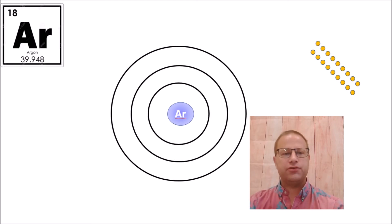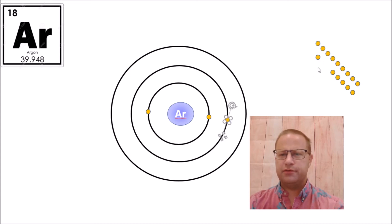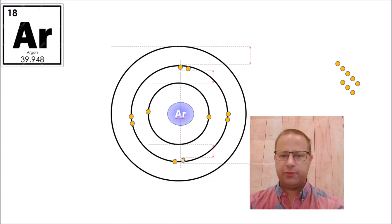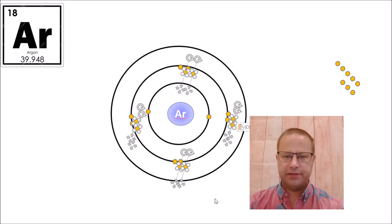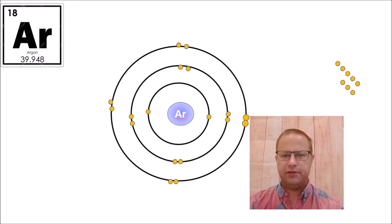Finally, let's take a look at argon. Argon has 18 electrons. Two go in the first shell, then eight go into the second shell — that's 10 so far. We have eight left over, which go into the third shell. So we have eight in the outer shell, eight in the interior shell — that's 16 — and two in the very inner shell, totaling 18 electrons.